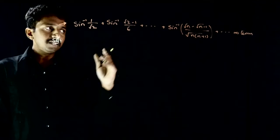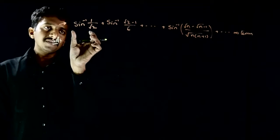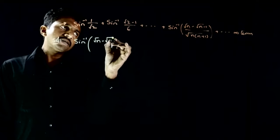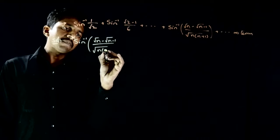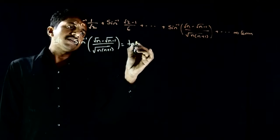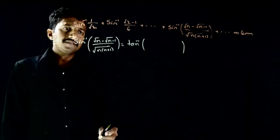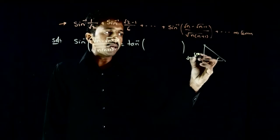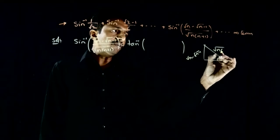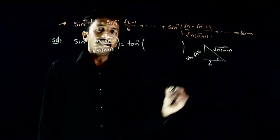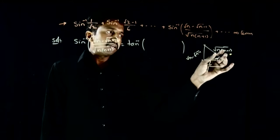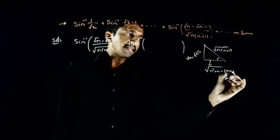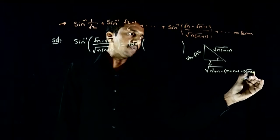First, I will try to convert the general term into tan inverse. Sine inverse of something can be rewritten as tan inverse of something using the triangle method. Let the opposite side be (root n minus root(n-1)) and the hypotenuse be root(n(n+1)). The adjacent side is the square root of hypotenuse squared minus opposite squared, which gives: square root of (n² + n) minus (n + n - 1 - 2·root(n(n-1))).